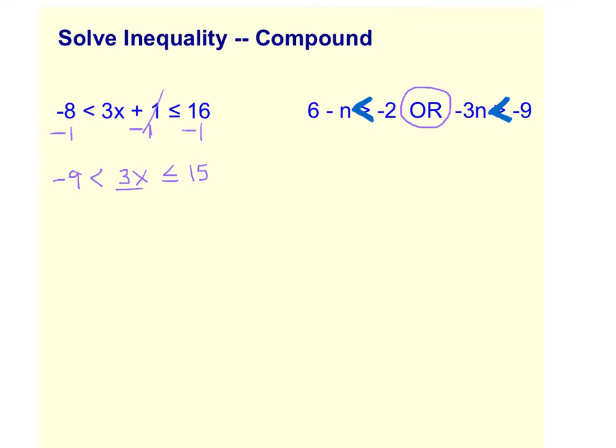Now 3 is being multiplied by X in the middle, so we'll undo that by dividing by 3. Remember, we divide by 3 in the middle, on the right, and on the left.